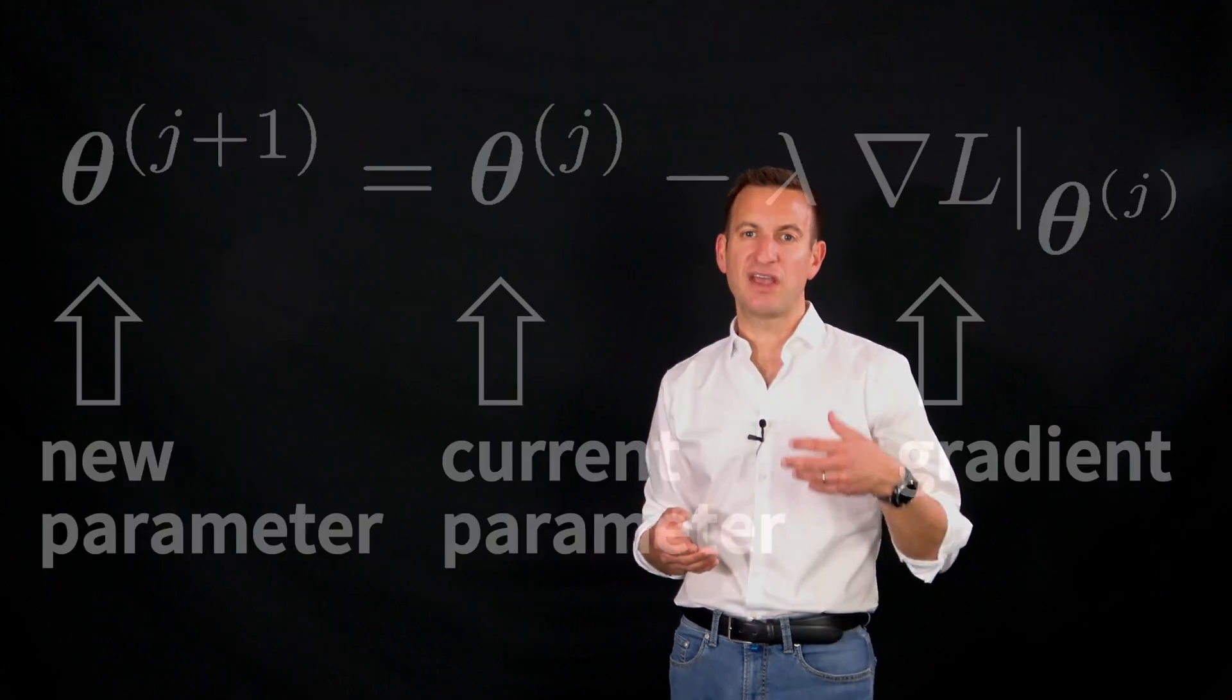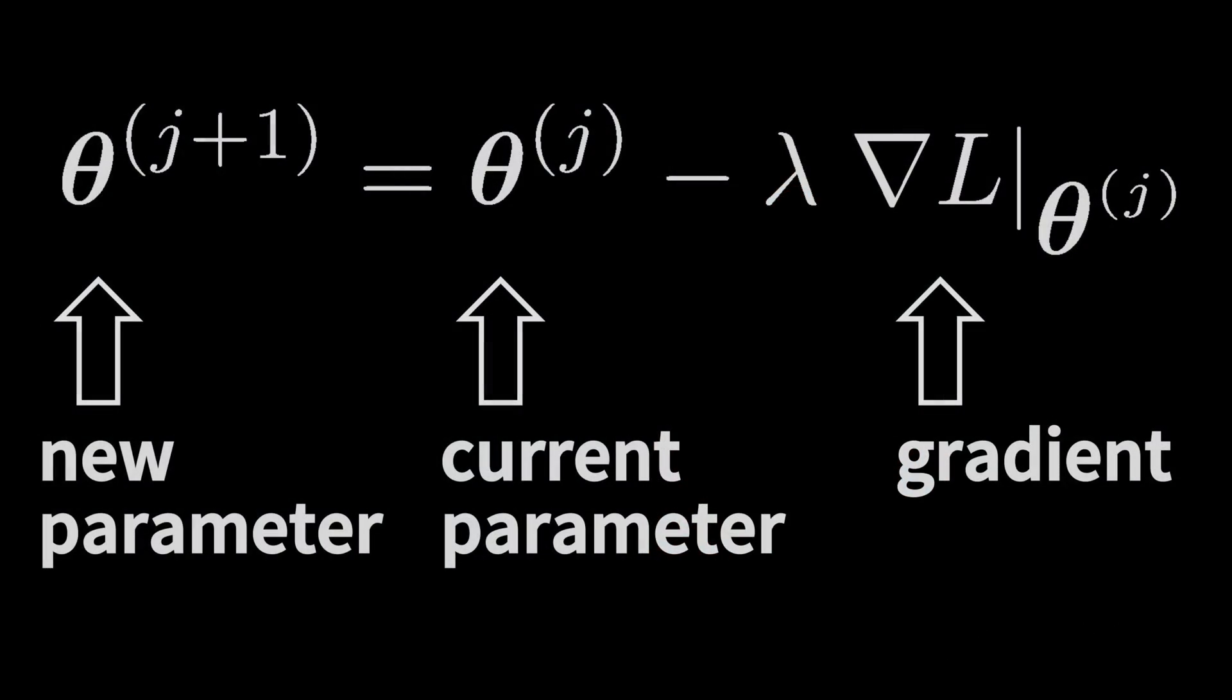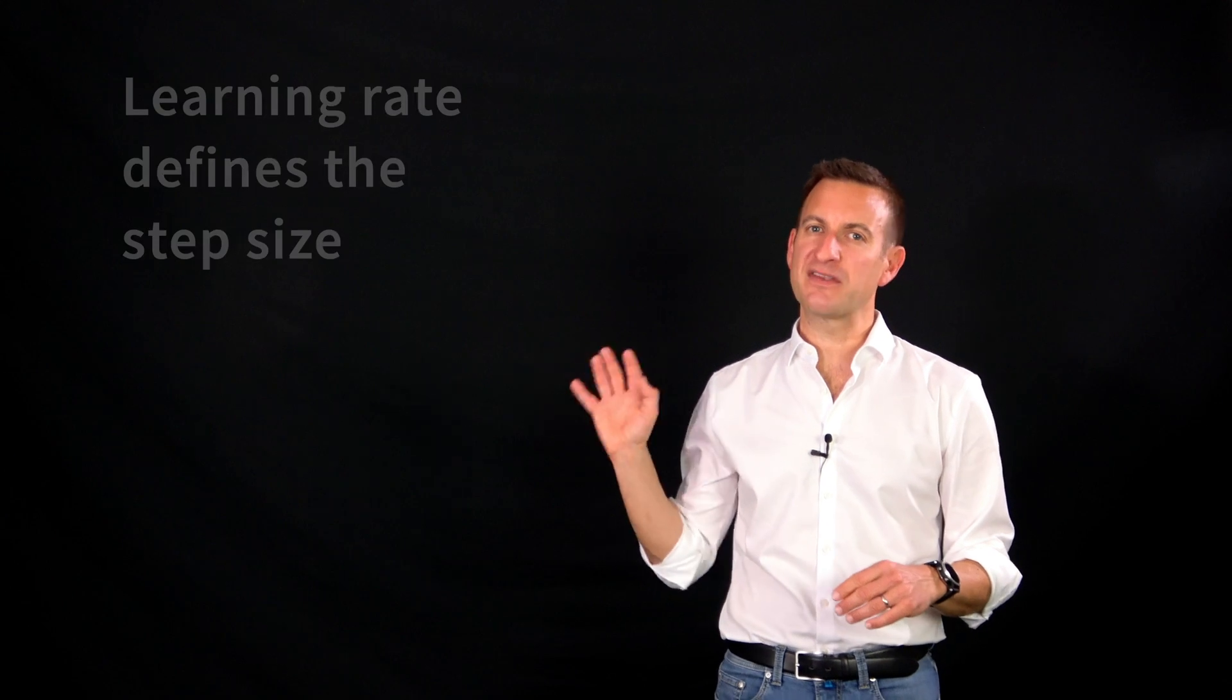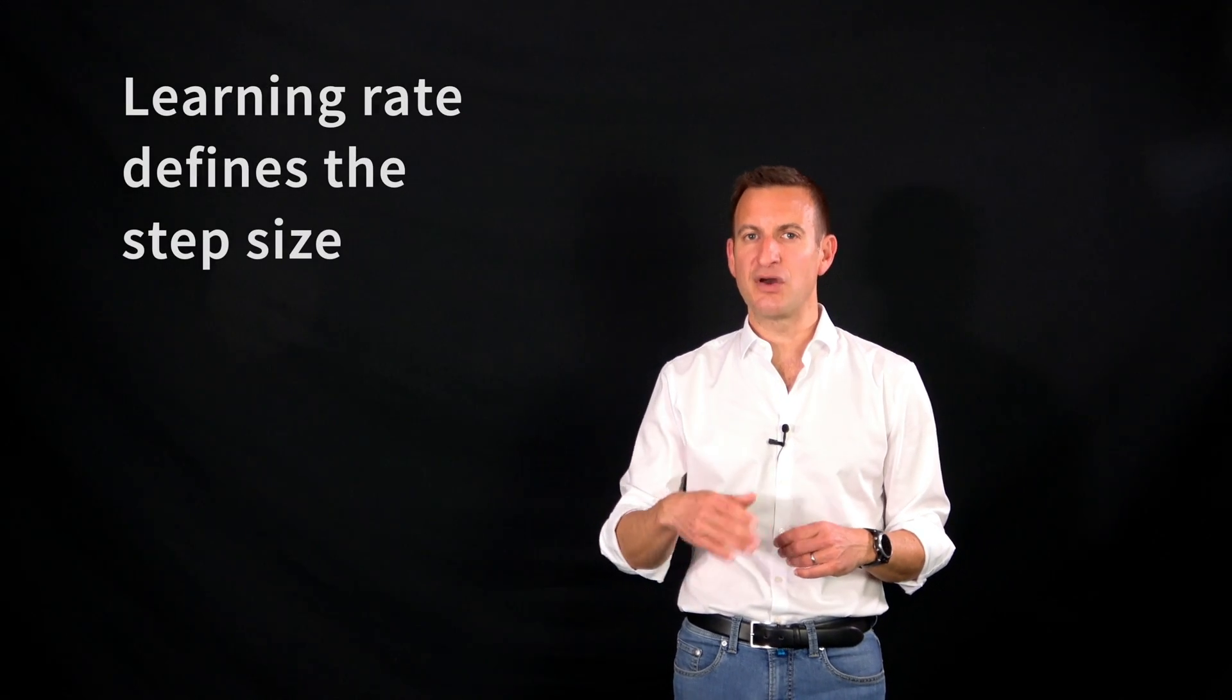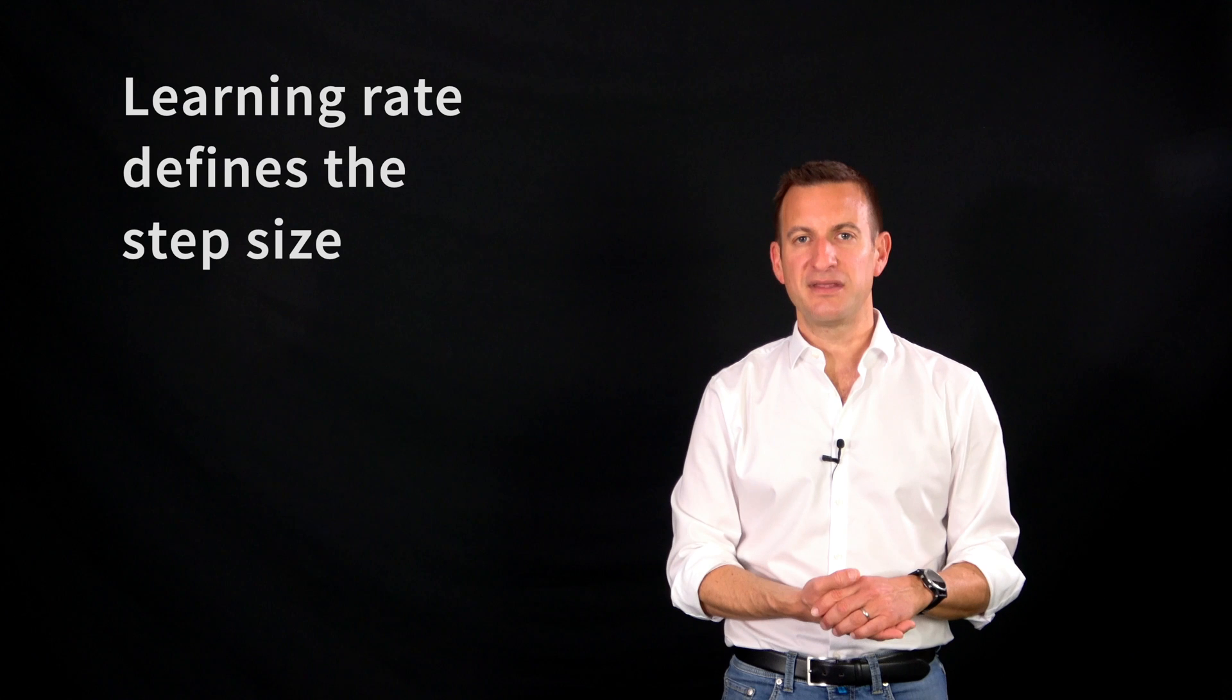In the end it boils down to an update rule which says our new parameter at iteration j plus 1 is our previous parameter minus a small value called a learning rate lambda times the gradient evaluated in the current parameter configuration. Just see lambda as a very small value which basically tells you how large your steps are that you're taking. And with this we can actually minimize a function.